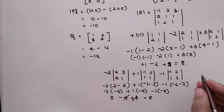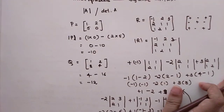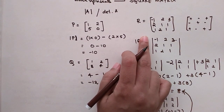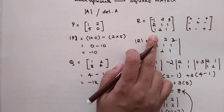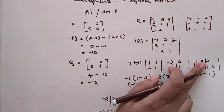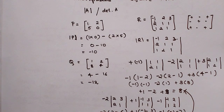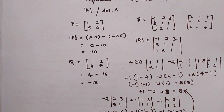You saw that you get the same answer regardless of which row you take into consideration. Just remember — whatever row or column you take, you have to ensure the correct signs are carried forward. Don't forget to like this video and hit the subscribe button — it's absolutely free. See you in the next one.